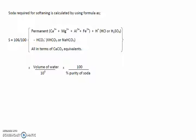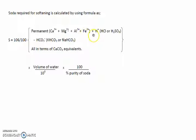Here is the formula for soda, that is sodium carbonate. A similar formula: 106 is the molar mass of soda divided by 100, the molar mass of calcium carbonate. The salts to consider in CaCO₃ equivalent hardness are permanent hardness producing salts of calcium, magnesium, aluminium, iron, and acids like HCl — these are added — and salts like NaHCO₃ or KHCO₃ are subtracted, multiplied by volume of water divided by 10⁶ times 100 divided by percentage purity of soda.